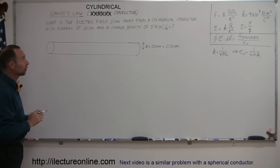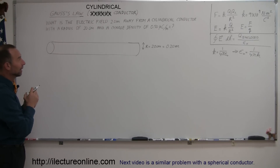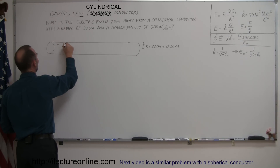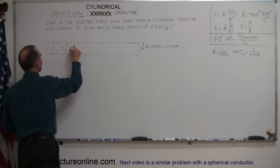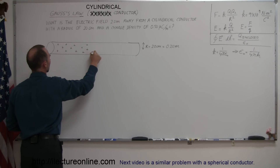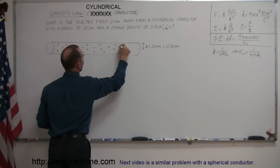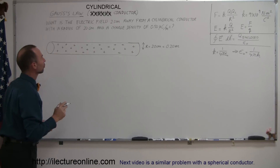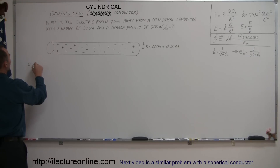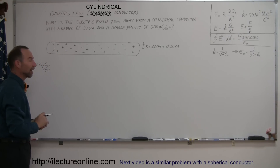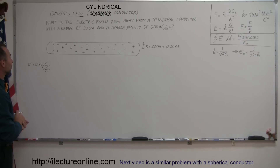Now that cylindrical conductor has a charge distributed over it. And again, such as with all conductors, the excess charge always distributes itself on the surface of the conductor. So you can imagine that all around on the surface, we will have excess charge evenly distributed around the conductor. The charge density — we use the letter sigma for that — is equal to 0.50 microcoulombs per square meter, which means every square meter of surface has a total charge of 0.5 microcoulombs or 0.5 times 10 to the minus 6 coulombs.